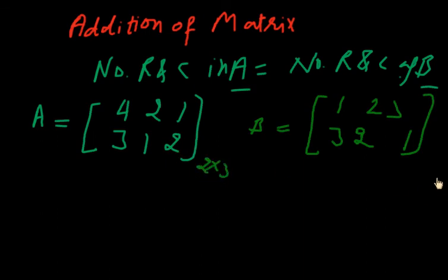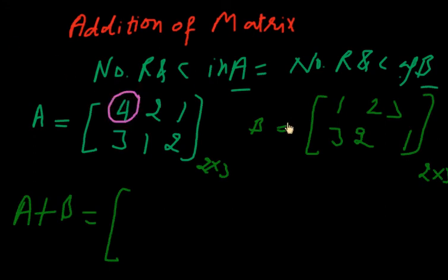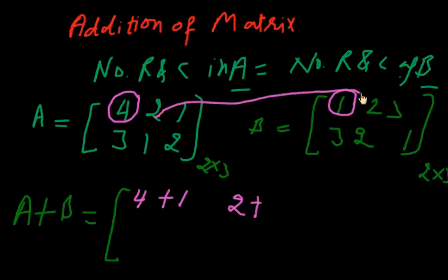So when we add A plus B, we will add each element. 4 will add with 1, 4 plus 1 like this. 2 plus 2, this 2 with this 2. This 1 plus with this 3, 1 plus 3.